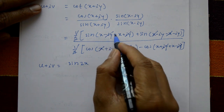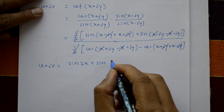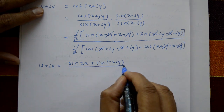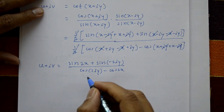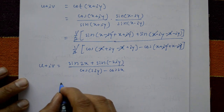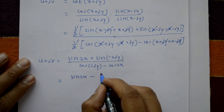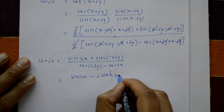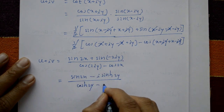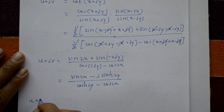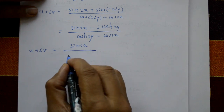Numerator: sin(2x) + sin(-2iy) = sin(2x) - sin(2iy). Using hyperbolic function: sin(iy) = i·sinh(y), so sin(2iy) = i·sinh(2y). Denominator: using hyperbolic function, cos(iy) = cosh(y), giving cosh(2y) - cos(2x). So u + iv = [sin(2x) - i·sinh(2y)] / [cosh(2y) - cos(2x)].